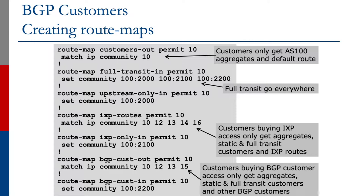For IXP-only permit 10, on the inbound we want to set community 2100. For BGP customers in the outbound direction, we want to match communities 10, 12, 13, and 15. So what you get are the aggregates, the statics which are part of the aggregate, the full transit customers and whatever they announce to us — the PI address space — as well as what we get from other BGP customers. In the inbound direction, we set the relevant community.